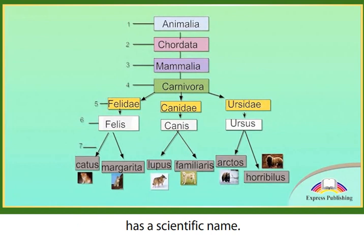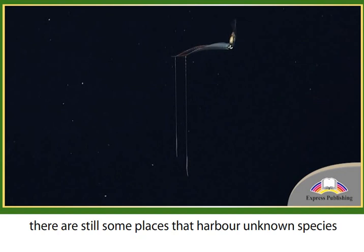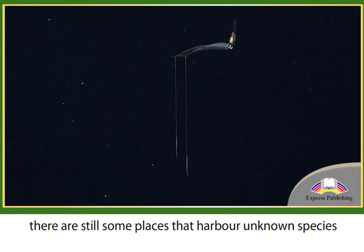Today, almost every organism on our planet has a scientific name. However, there are still some places that harbor unknown species, such as the depths of our oceans and our unexplored forests and jungles.